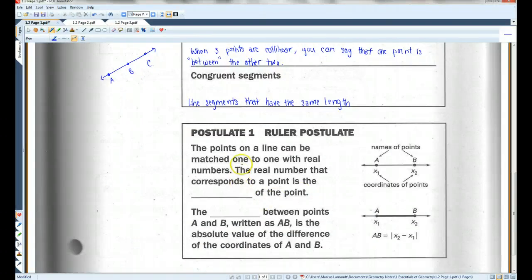The points on a line can be matched one-to-one with real numbers. The real number that corresponds to a point is the coordinate of the point.